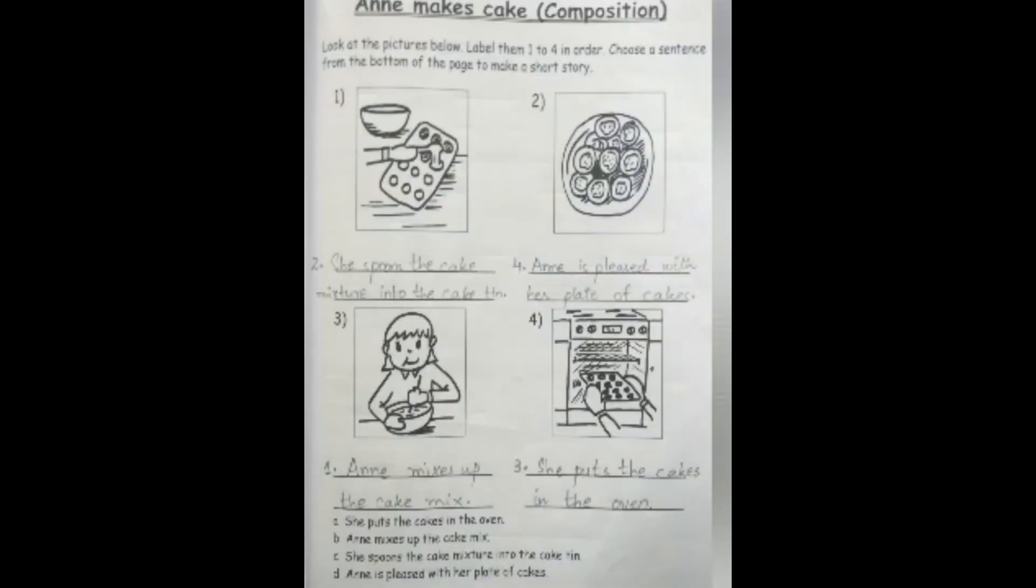After doing that, come on to page number 31. Here we have a short story or a short composition and the name is Ann makes a cake. Now here we have four pictures. After the pictures, see at the bottom we have four sentences written.